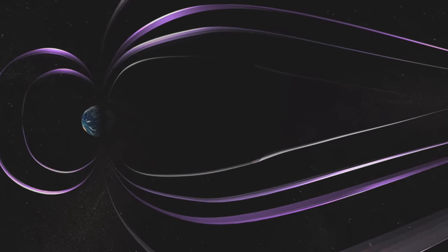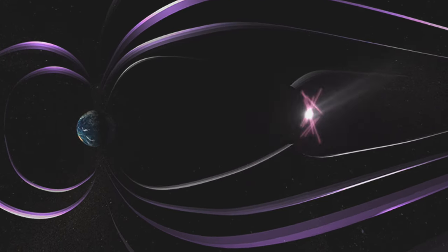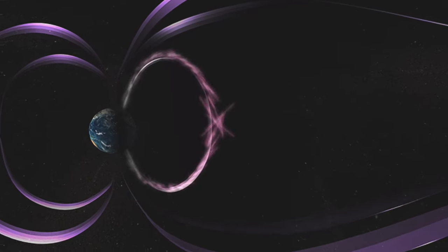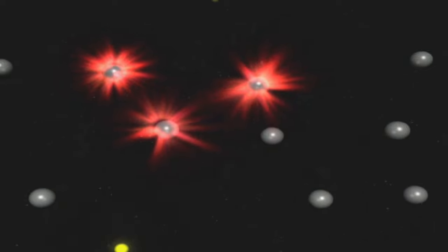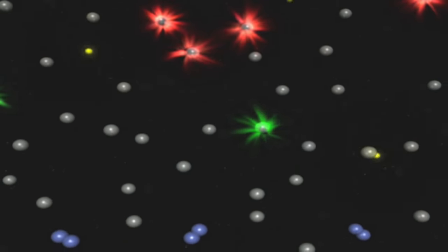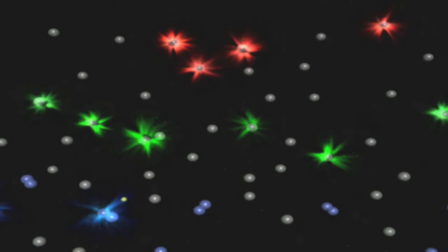During substorms, the stretched magnetic field is overloaded with too much energy, and the lines snap back like a giant slingshot, flinging electrically charged particles trapped in the magnetic tail toward Earth at high speeds. As the particles bombard the Earth's upper atmosphere, the electrons excite the oxygen and nitrogen atoms in the atmosphere, producing the red, green, and blue lights of these miraculous auroras.